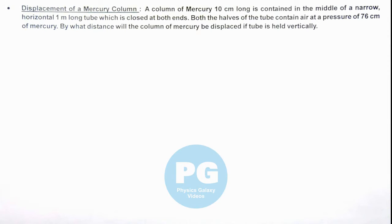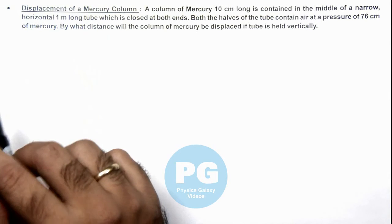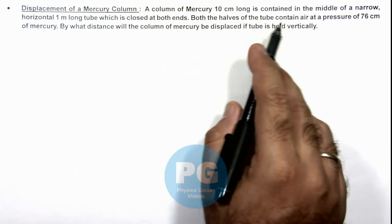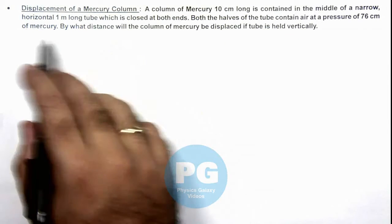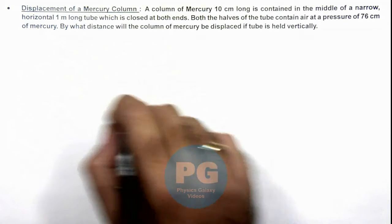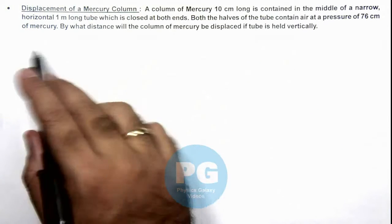In this illustration we'll study about the displacement of a mercury column. Here we are given that a column of mercury 10 centimeter long is contained in the middle of a narrow horizontal 1 meter long tube which is closed at both ends. Both halves of the tube contain air at a pressure of 76 centimeter of mercury.